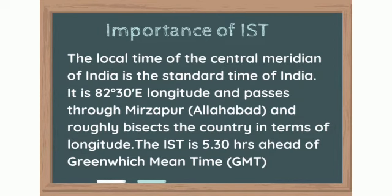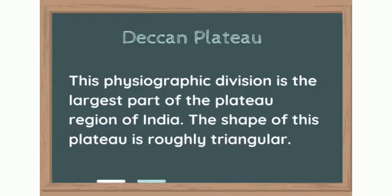Give the importance of IST. The local time of the central meridian of India is the standard time of India. It is 82 and a half degrees east longitude and passes through Mirzapur, roughly bisecting the country in terms of longitude. The IST is five and a half hours ahead of Greenwich Mean Time (GMT).